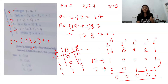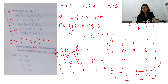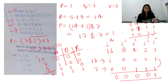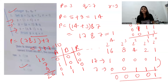Converting 7 to binary: 0 1 1 1. Converting 3 to binary: 0 0 1 1. Taking AND: result is 0 0 1 1 which is 3. So p becomes 3 plus 7 equals 10. Now we print p plus q plus r: p is 10, q is 7, r is 9, giving 10 plus 7 plus 9 equals 26. Option number 3 is the correct answer.